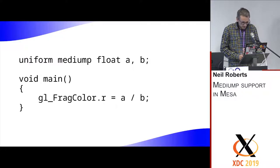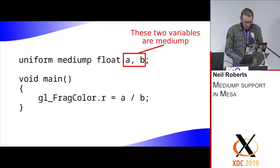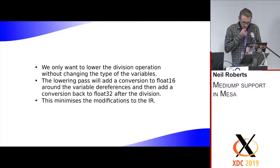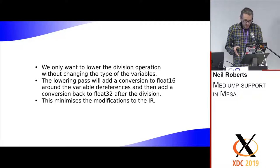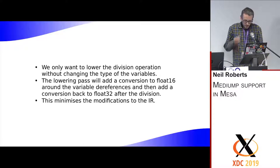As an example of how this works — here's an example shader with an operation that can be done at medium precision. We only want to lower the operations, not the types. The way we make this work is: whenever we want to lower an operation, we add a conversion to float16 around any dereference of a mediump variable, and then after the operation is finished, we add a conversion back to float32. That way we minimize modifications to the IR without changing any types.